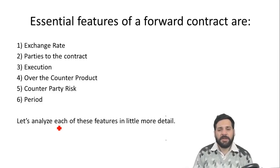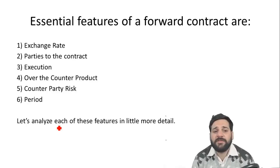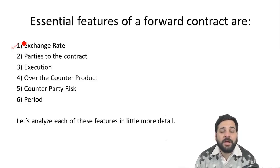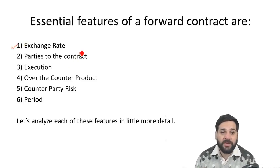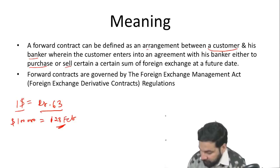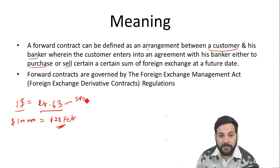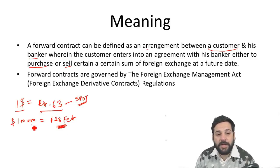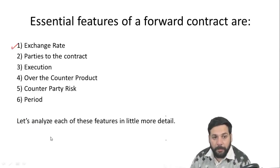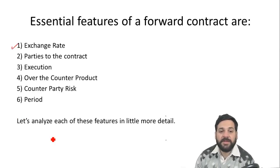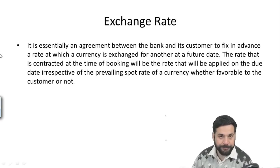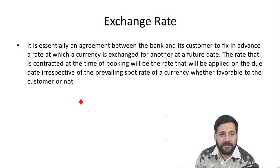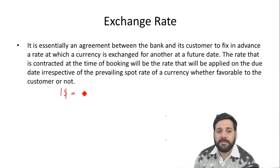This act has been amended many times. The features of a forward contract include a predetermined exchange rate. For example, the 63 rupees per dollar rate is the spot rate, and the rate at which the bank is going to buy 1 lakh dollars is the forward rate. Simply put, 1 dollar equals 63 rupees — this is the base currency.